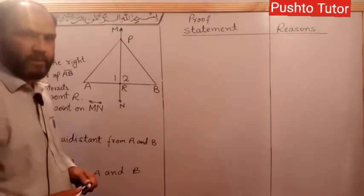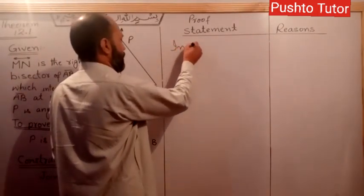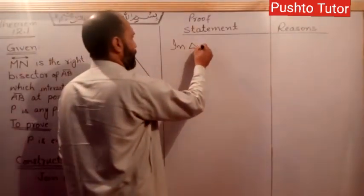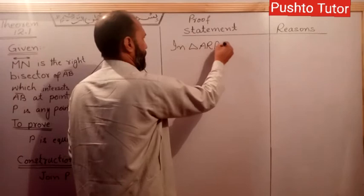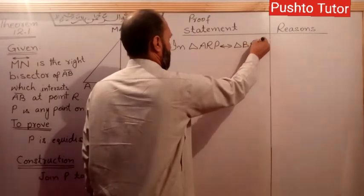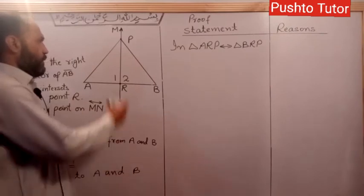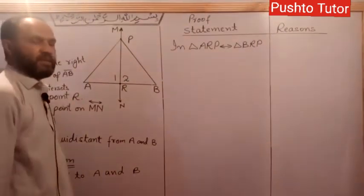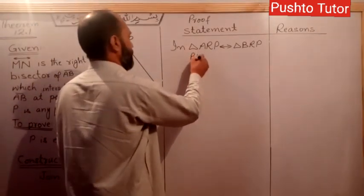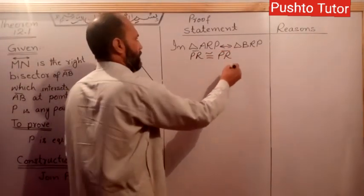AP is equal to BP. This is what we need to prove. We will establish correspondence. Triangle ARP corresponds to triangle BRP. PR is congruent - this is a common side of the two triangles.